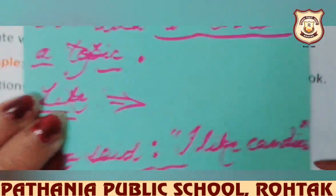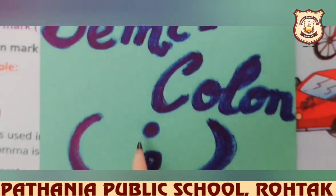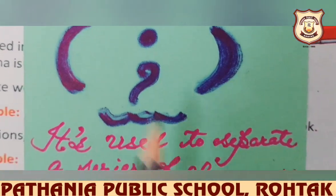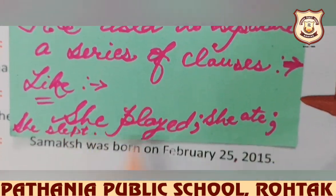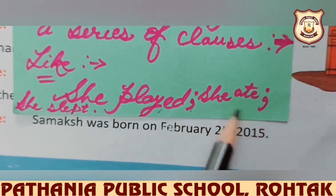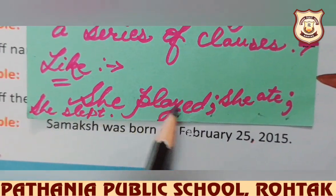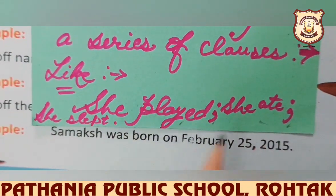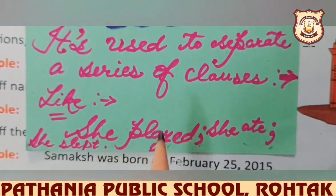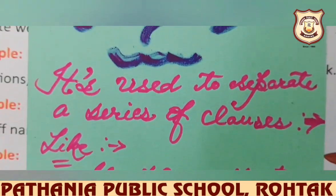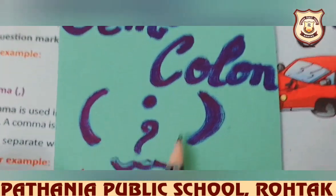Our next punctuation mark is semicolon — a dot with a comma under it. It is used to separate a series of clauses. For example: 'She played; she ate; she slept.' Here you can see a series of short phrases, not complete sentences. Between these clauses, we have used semicolons.